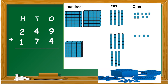So, here we have another problem and we are going to do it using the base 10 blocks. We have 249 added to 174. You see we have it represented here: 200, 4 tens, 9 ones. And then we have 100, 7 tens, and 4 ones. So, we are going to add our ones first. 9 add 4. Remember, we keep the bigger number in our head. So, after 9: 10, 11, 12, 13.